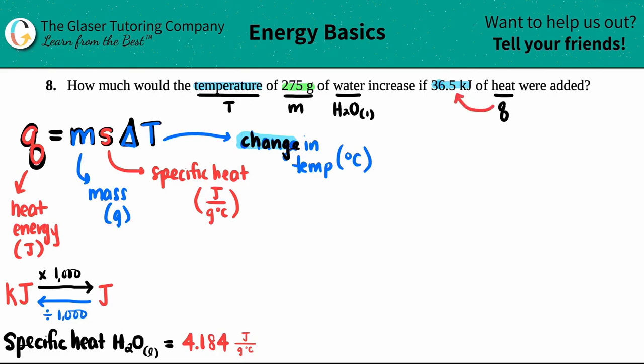However, when we're using this, it has to be in joules. So the first thing I have to do is I have to convert 36.5 kilojoules into joules. So KJ into J. How do I do that? Well, it's a simple conversion. I put a trick down here for you guys.